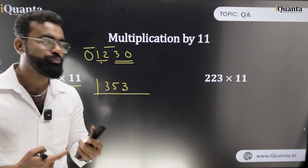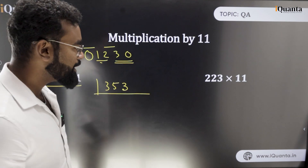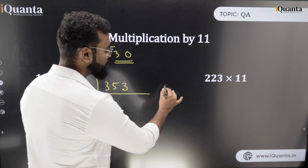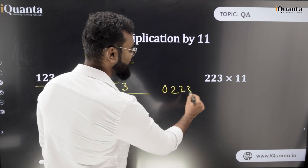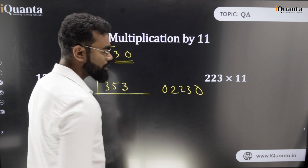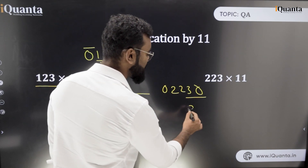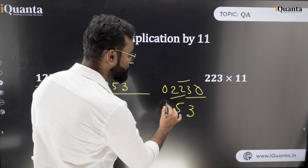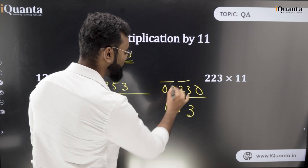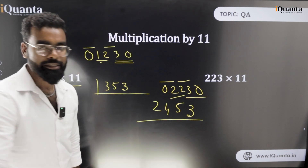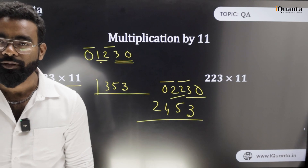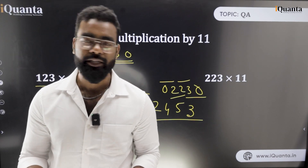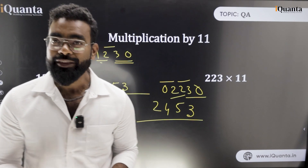Similarly, let's check 223 into 11. Write 0-2-2-3-0. First step: 3 plus 0 is 3, then 2 plus 3 is 5, then 2 plus 2 is 4, then 0 plus 2 is 2. Your answer is 2453. It's that simple — this is the technique for multiplication by 11.